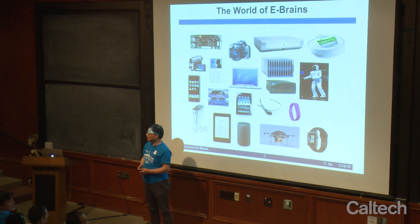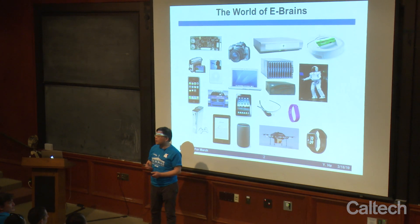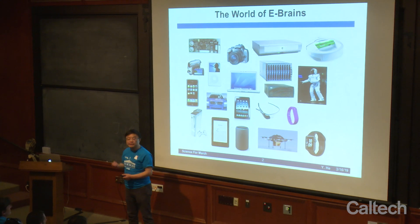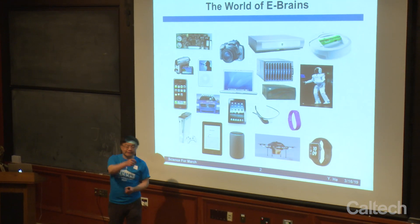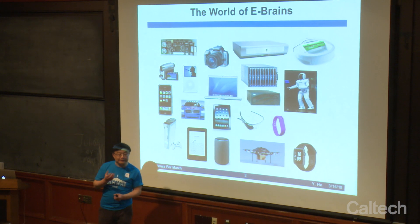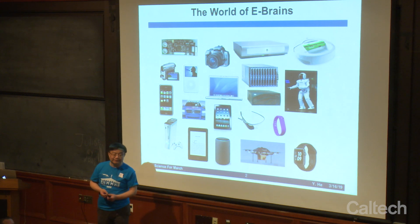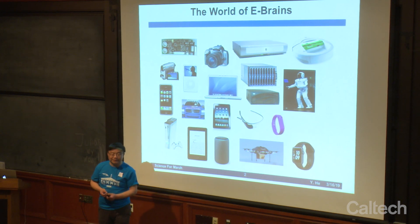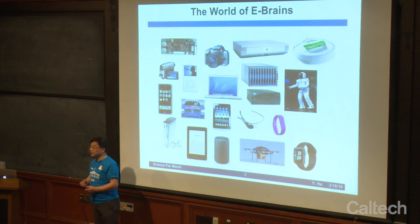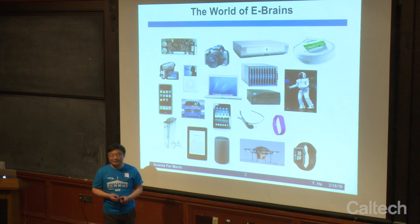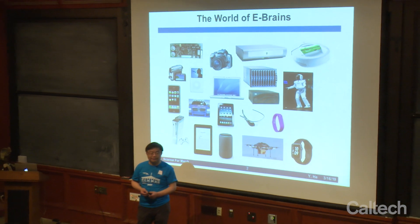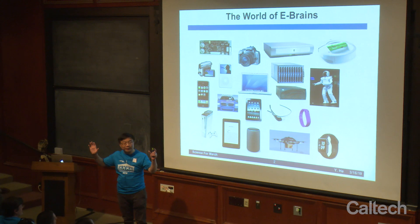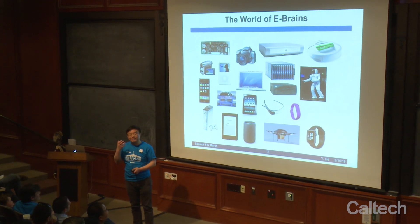Back in the very early days, our ancestors would try to count the number of deer they hunted. They had to have ways to count and remember those numbers. What kind of computer did they use? They used their fingers — that's why we started with the decimal number system, because we have 10 fingers. That's how it all started.